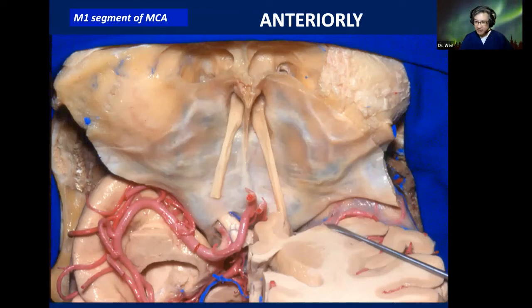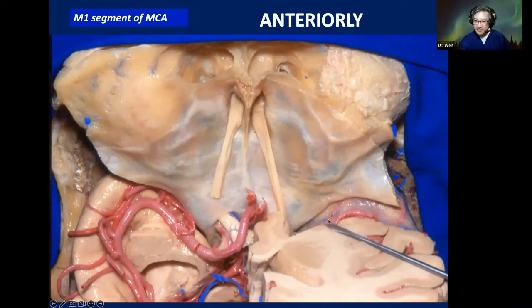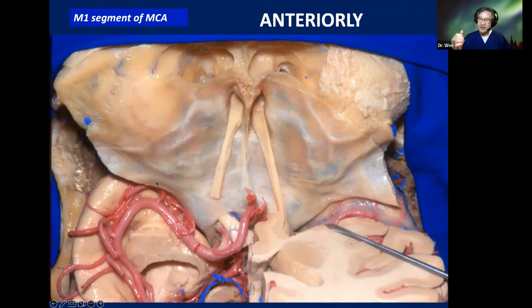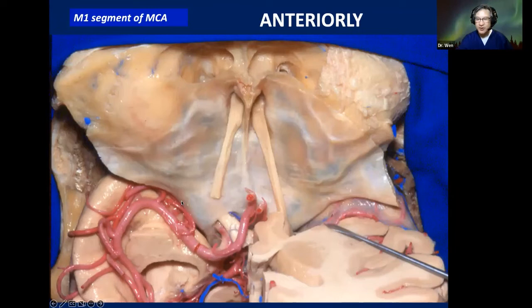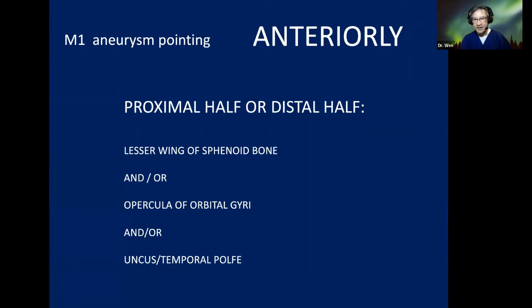The recommendation for aneurysms pointing anteriorly: be careful with your craniotomy. In craniotomy we bite off the sphenoid bone using a rongeur or drill. Be careful — the aneurysm can be attached to the dura and consequently to the bone. If you are not aware of an aneurysm pointing anteriorly being related to the bone, you might rupture it during craniotomy or even during dura opening. That is the take-home message for M1 aneurysms pointing anteriorly.